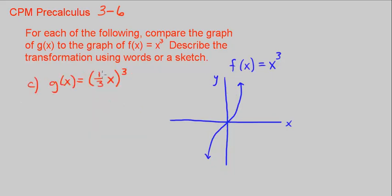Finally, let's go on to part c. Part c, again, is inside the parentheses, the change. So this, again, is a horizontal stretch by a factor of... And remember, you take the reciprocal. The reciprocal of 1 over 3 is 3 over 1, or 3.